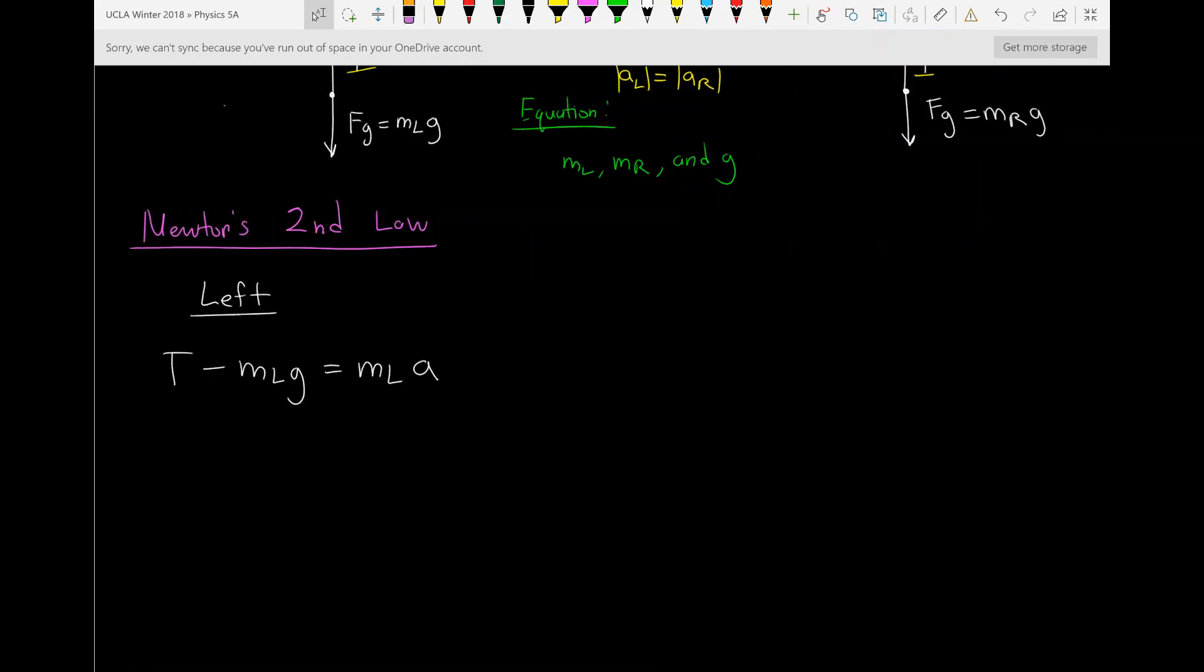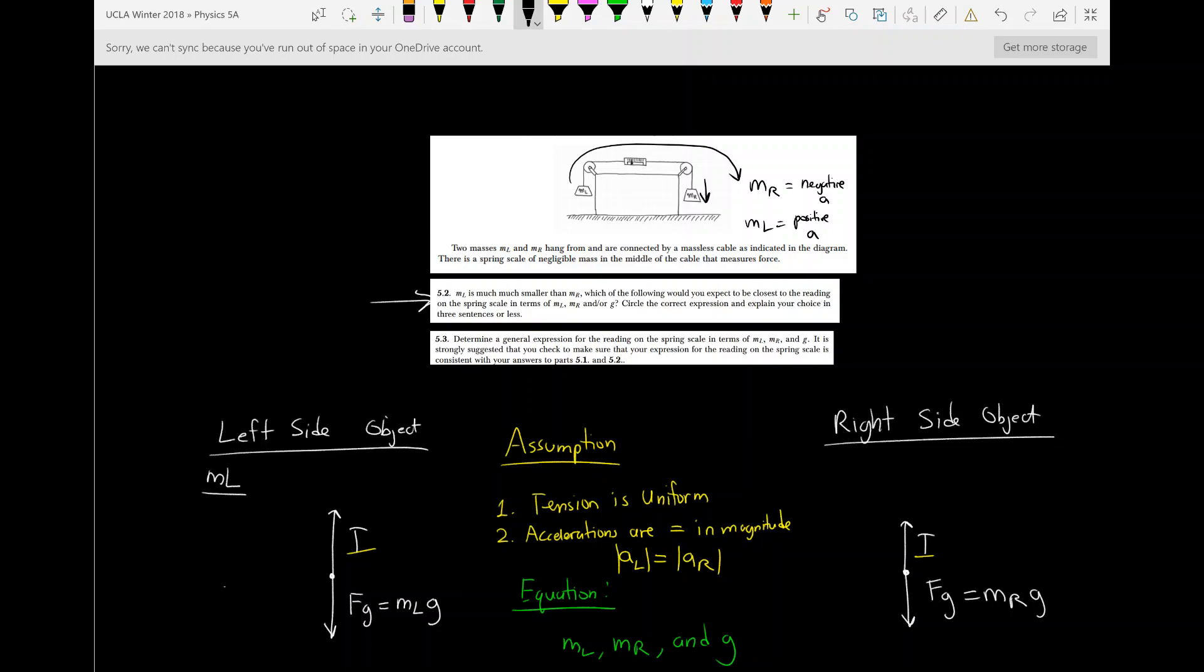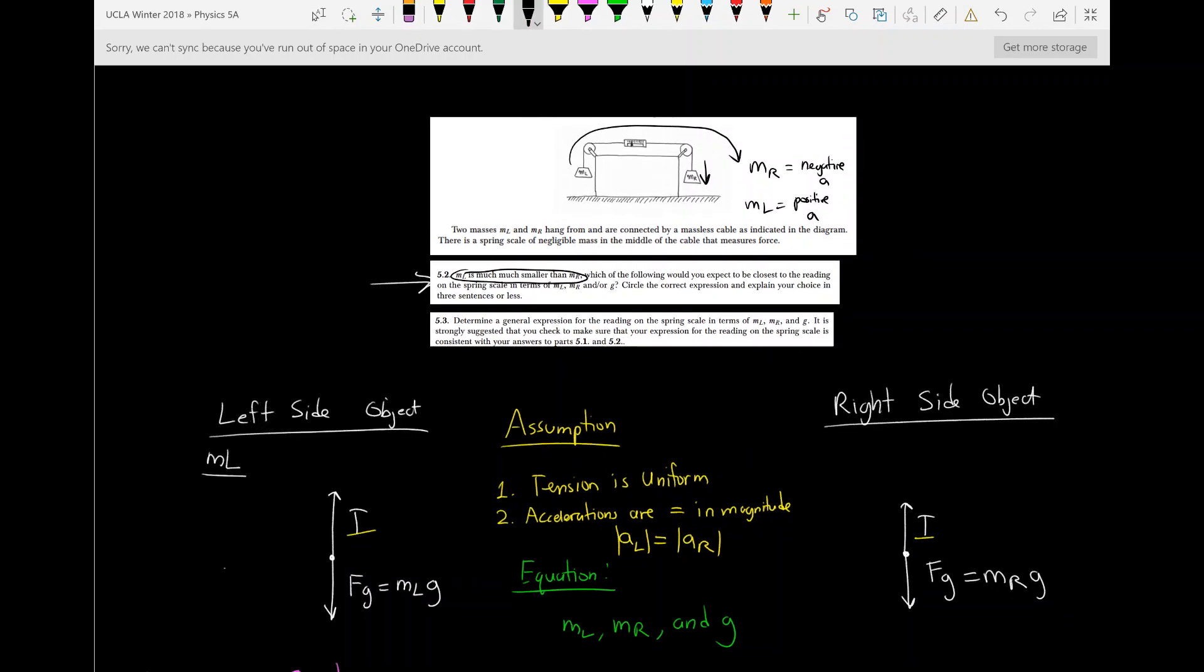Now let's use the right side problem to figure out a second equation. That's going to be really useful. And if this doesn't make sense, it's really the exact same thing as the left side object's second law equation. The only difference is we're using the mass R instead of mass L and also a negative acceleration because the object is going down the right side.